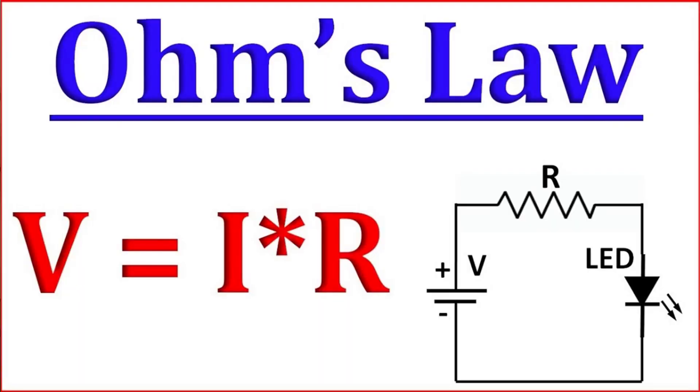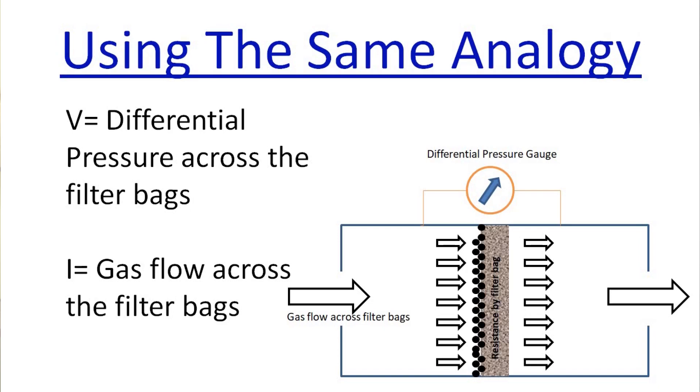There is a simple way of understanding and remembering this logic: Ohm's Law, V = IR, which says voltage is equal to current times resistance. Using the same analogy, voltage is equal to the pressure drop across the filter bags, which is DP, and the current is the flow rate across the filter bags. So using this logic, when the flow rate increases, DP increases, and when the flow rate decreases, the DP decreases.